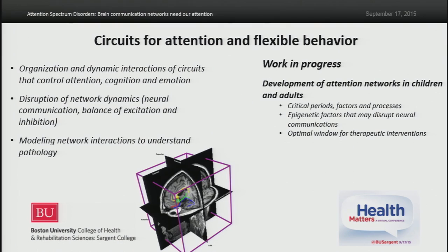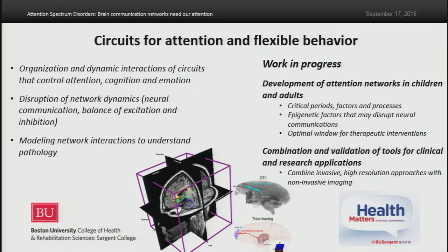For example, there is a very long list of substances under the general category of estrogen disruptors — like bisphenol A found in plastics, some antidepressant drugs, and immunosuppressive drugs — that could have an effect on axon growth. We're trying to narrow down optimal windows for potential therapeutic interventions. Moreover, we are trying to combine high-resolution invasive procedures used to study brain pathways with non-invasive imaging approaches that can be used in humans, in order to validate these tools and improve their accuracy for both research and clinical applications.